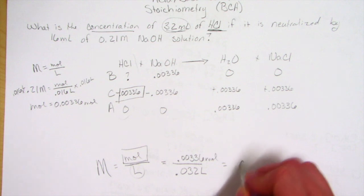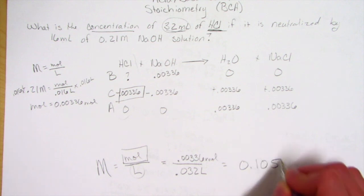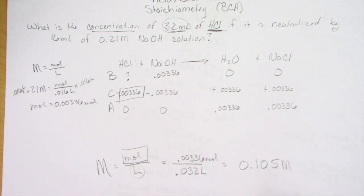If we do this calculation out, we find out that our concentration was 0.105 molar. So the concentration of HCl that we had in this reaction to begin with was 0.105 molar.